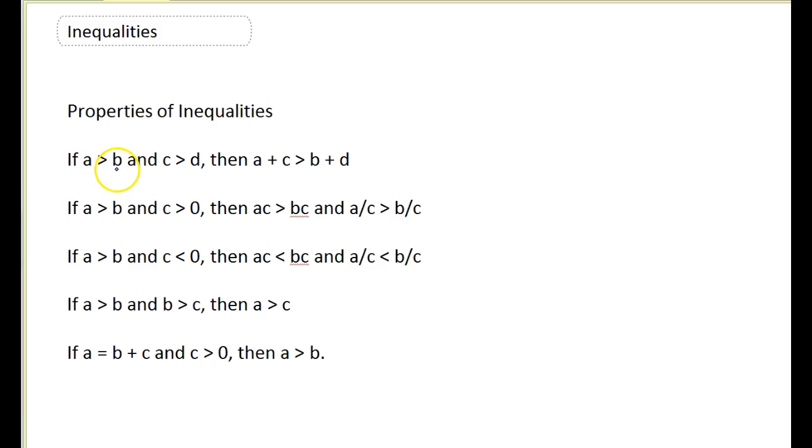If A is bigger than B and C is bigger than D, then if I add the two bigger numbers together, A plus C, they're both going to be bigger than B plus D.